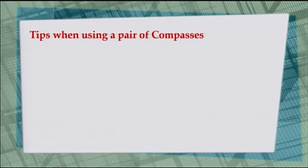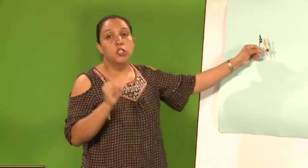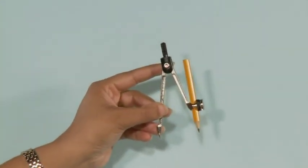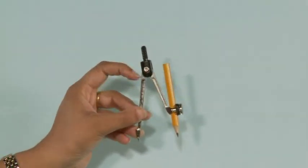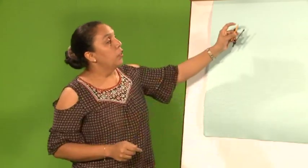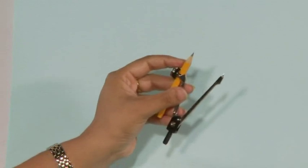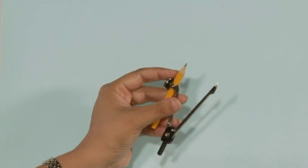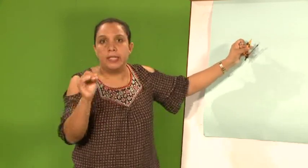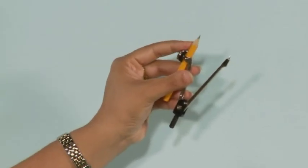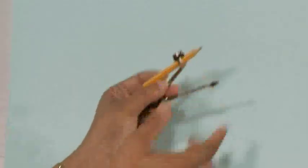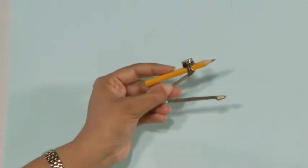Now, some tips when using a pair of compasses. First, you need to ensure that the hinge, which is at the top of your pair of compasses, is well tightened — it should not be loose. Second, the tip of your pencil should be a fine tip, because we need to draw thin lines. Geometrical construction is about drawing accurately, so the tip of your pencil has to be fine. You also need to ensure that the hold of the pencil is tightened so that your pencil does not slip.